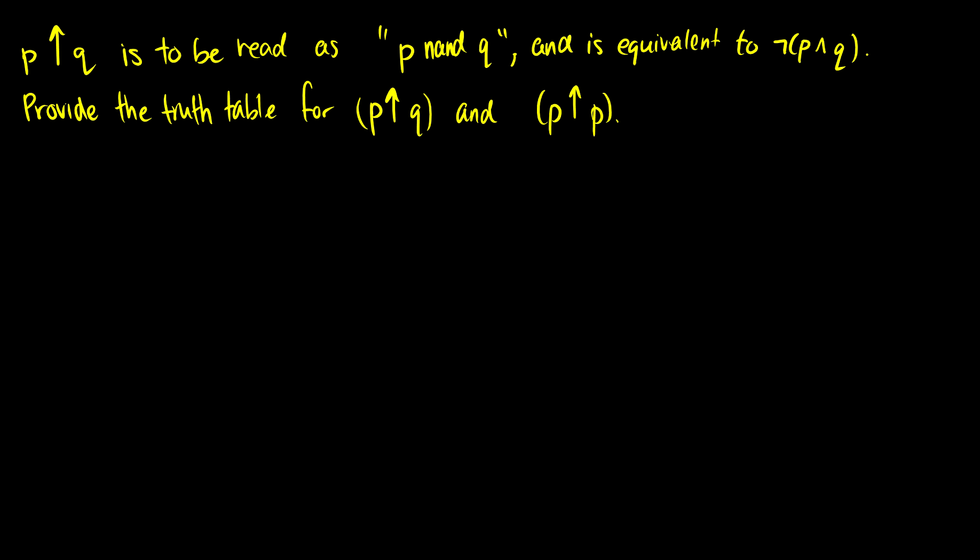In this video we're going to introduce another logical operator called the Schaeffer stroke. We have p Schaeffer stroke q, which I'm going to call p up q, and that's to be read as p nand q. So this is p not and q. It's equivalent to not (p and q), which is the same thing as saying not p or not q.